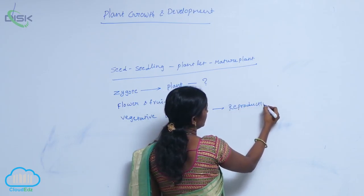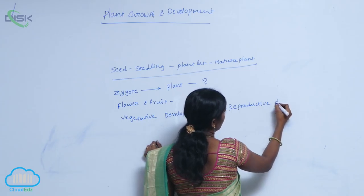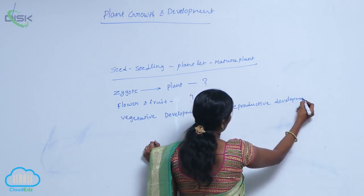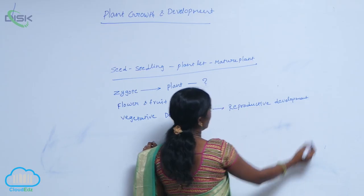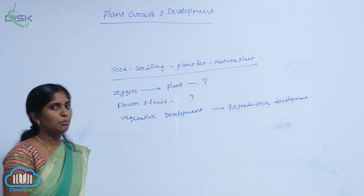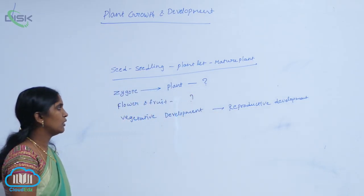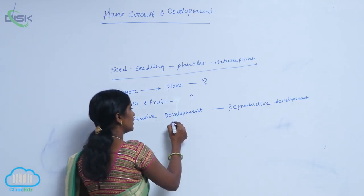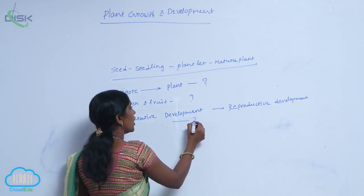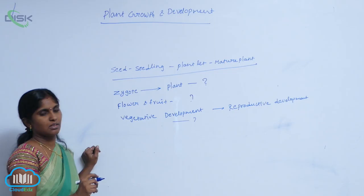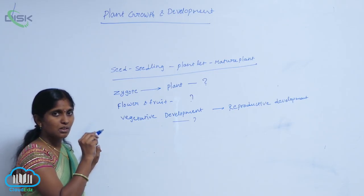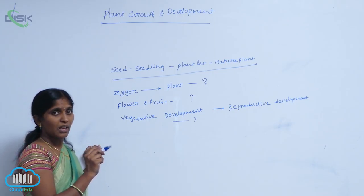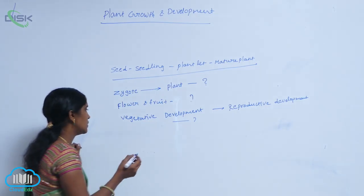Vegetation development promotes reproductive development. It means after the development of vegetation, it promotes and goes for reproduction. How it is moving, how these are organized, how these are processed, how these are carried out.